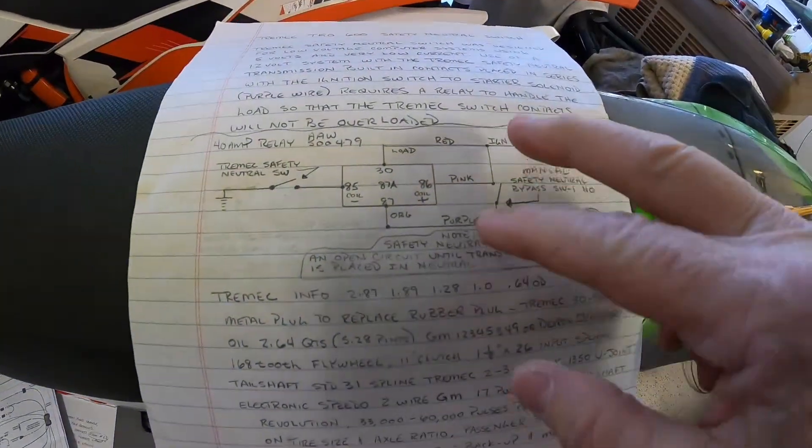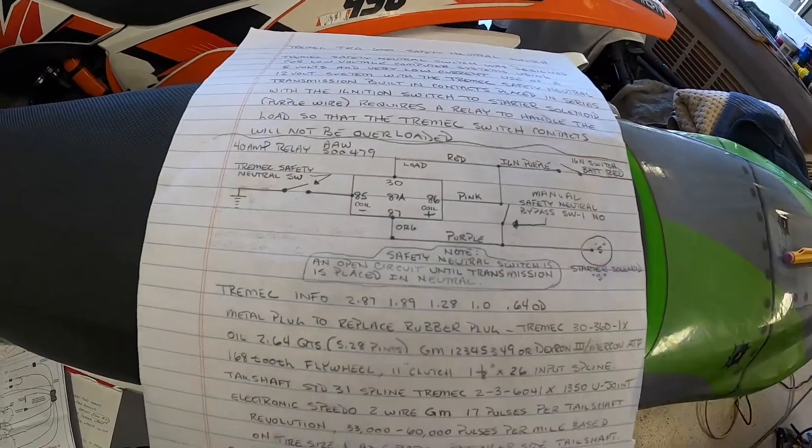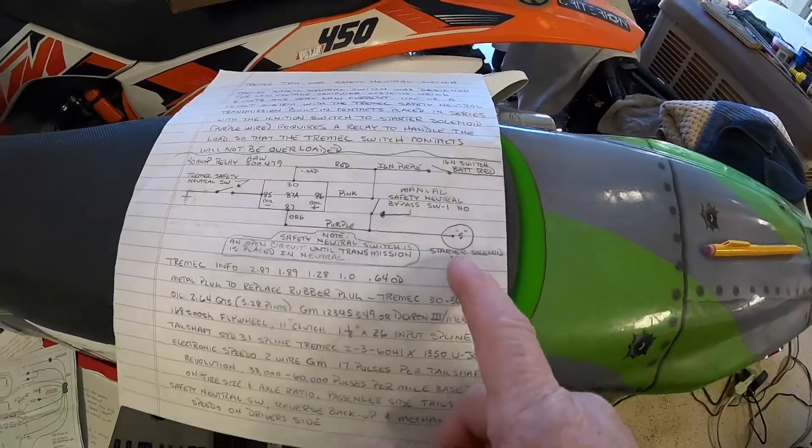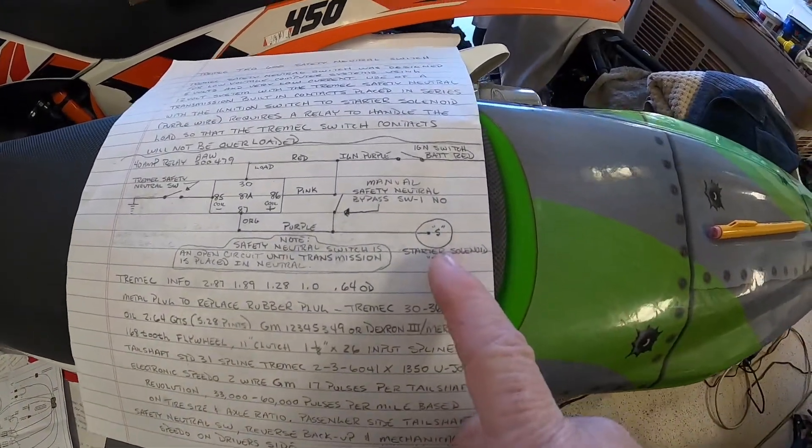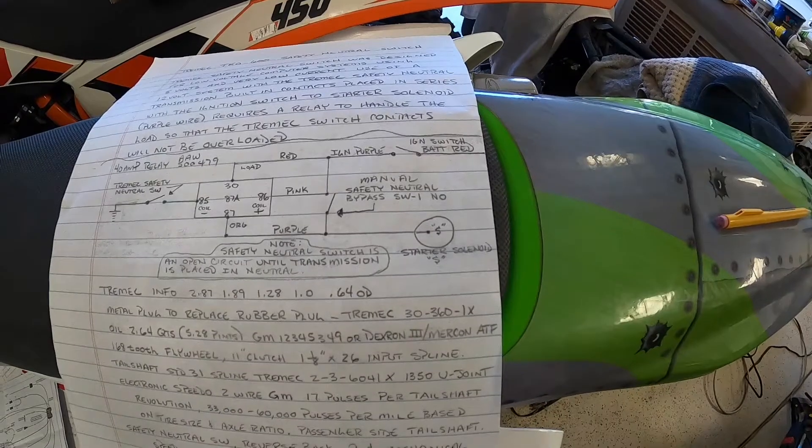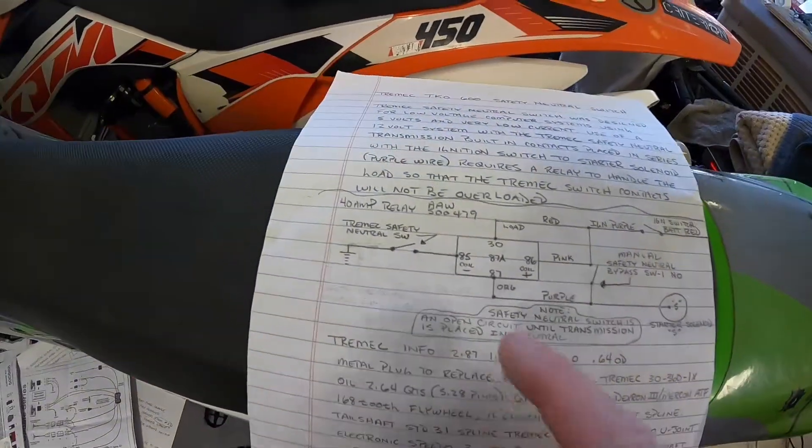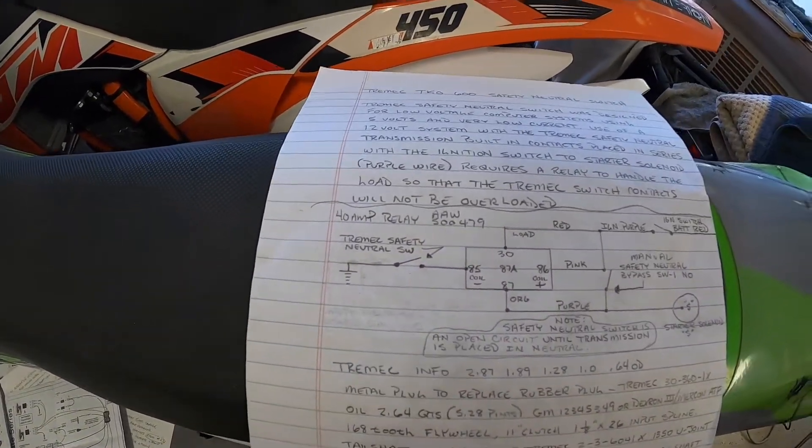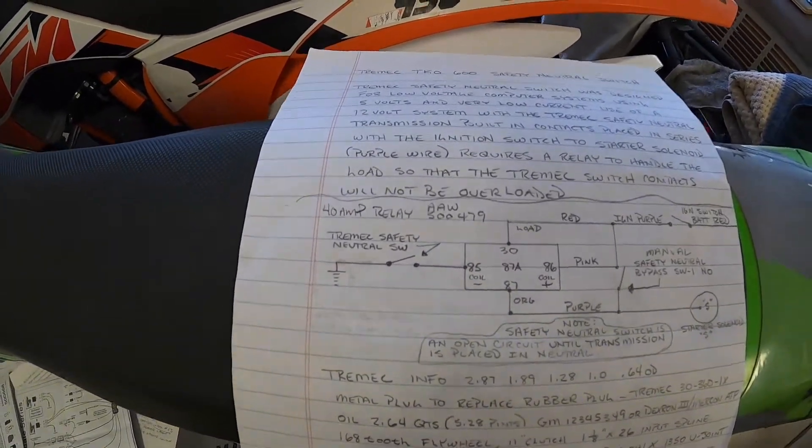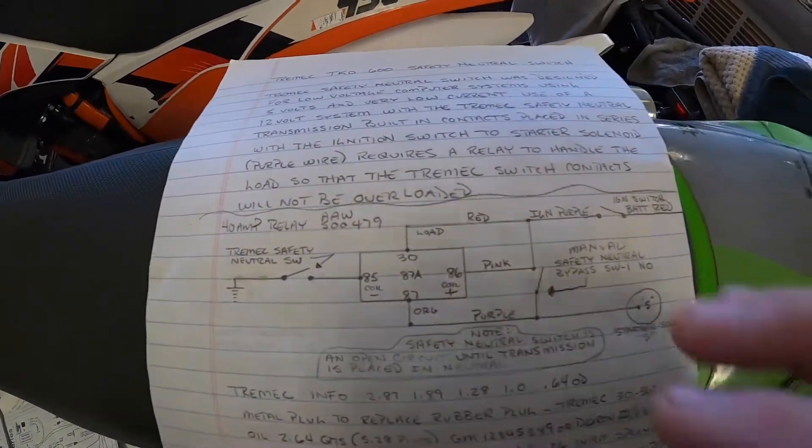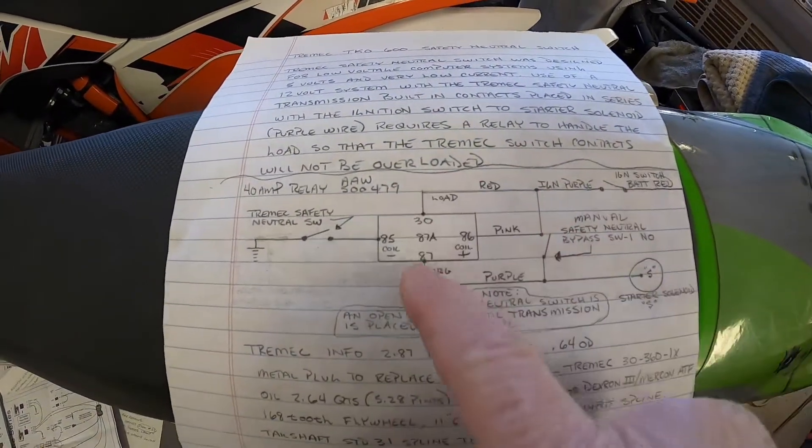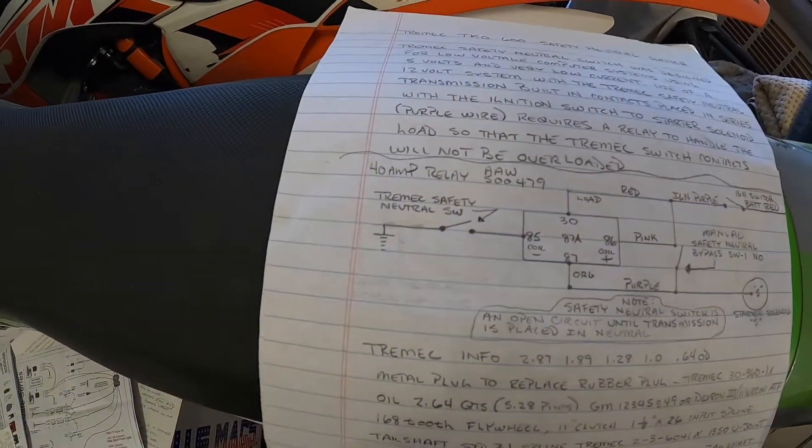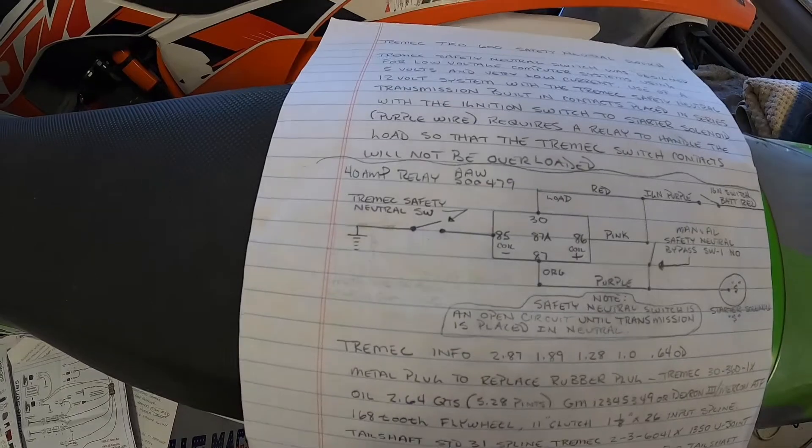If you try to run the two purple wires through your safety neutral switch, through the Tremec down to the starter solenoid, my understanding is these operate on about 8 to 12 amps during starting. So from my understanding that's pretty hard on this Tremec safety neutral switch which is located inside the transmission. So we're going to put this relay in to handle the actual load to the solenoid. I'll show you where the switch is at and how we're going to do this.